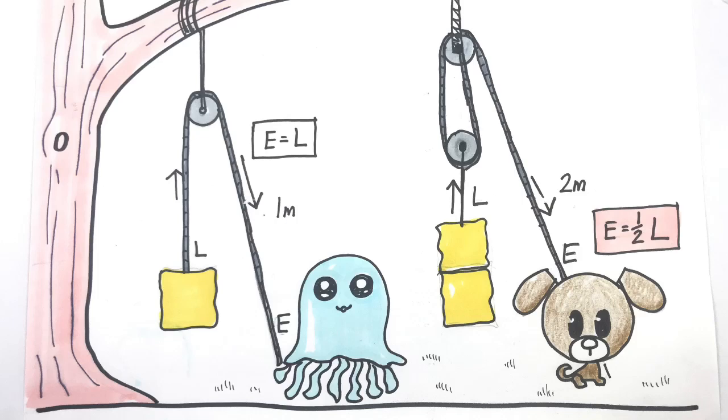Hi, today we are learning all about pulleys. Pulleys are one of the six simple machines and today I have a guest drawer with me. It's my daughter Ava. Welcome Ava.